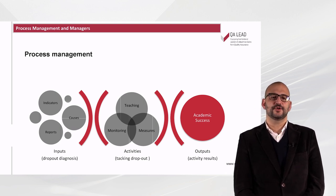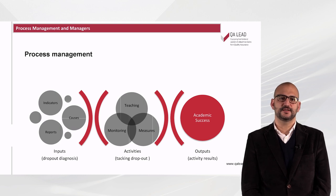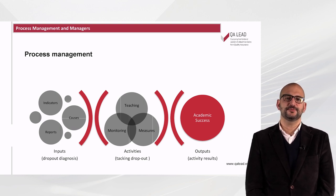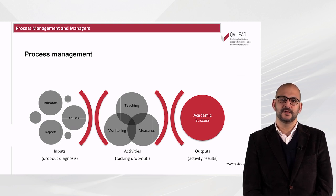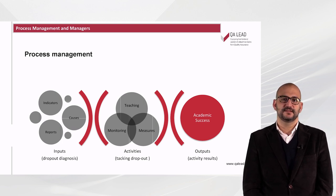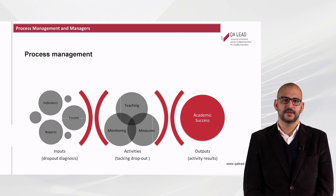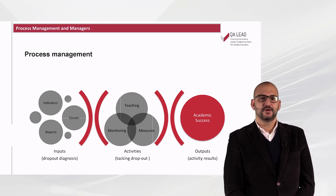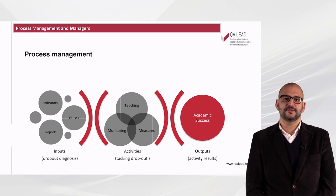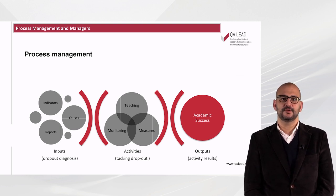To talk about quality structure in any institution, we need to clarify the process management. Process management implies looking at the organization not in a departmental way, but in an integrated cross-cutting way, where there are, by each process, inputs — that is to say, the set of information and documents that allow the decision-makers to be well informed, for example, the rates and diagnosis of drop-out causes — and activities, for example, the set of development activities, regardless of the functional area of the organization that develops them.